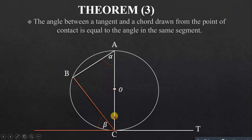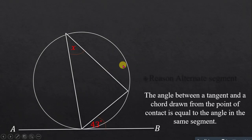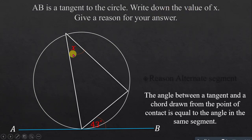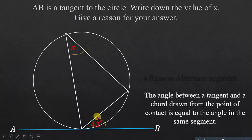If the angle is in a different segment, it corresponds to the other tangent-chord angle. Line AB is a tangent to the circle. We are asked to find the value of x and give a reason.